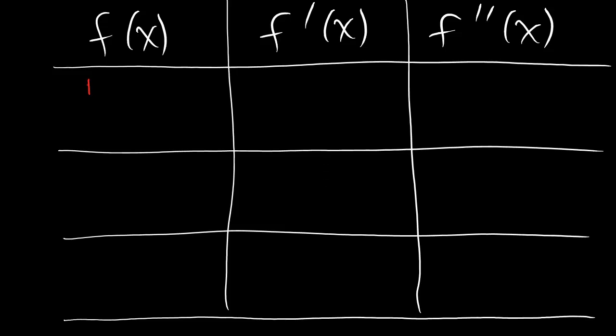What if we know that f(x) is positive? Can we conclude anything about the derivative or the second derivative? The answer is no — we don't know a thing about the derivative or the second derivative. The reason is that if the original function is positive, it could be increasing or it could be decreasing. So the derivative could be positive or negative — we just don't know. That's a good thing to know because sometimes you'll see trick questions that say, 'if the original function is positive, what can you conclude about the derivative?' And the answer is nothing.